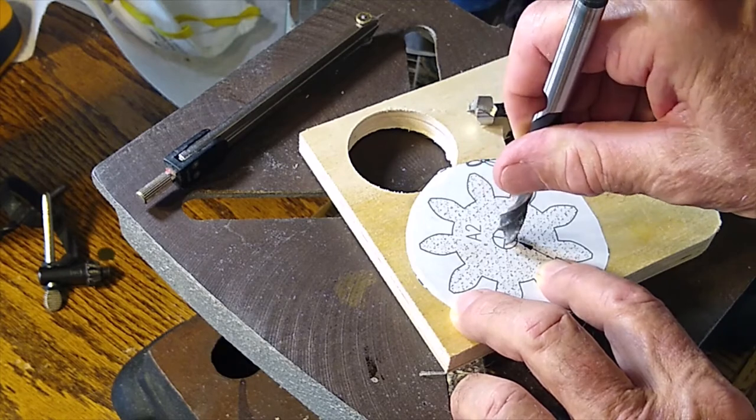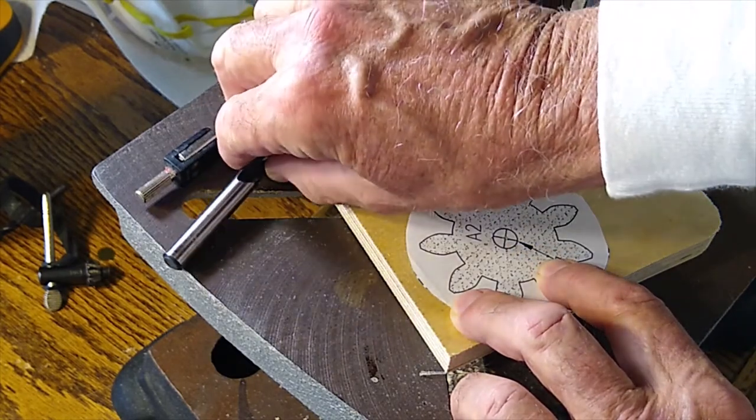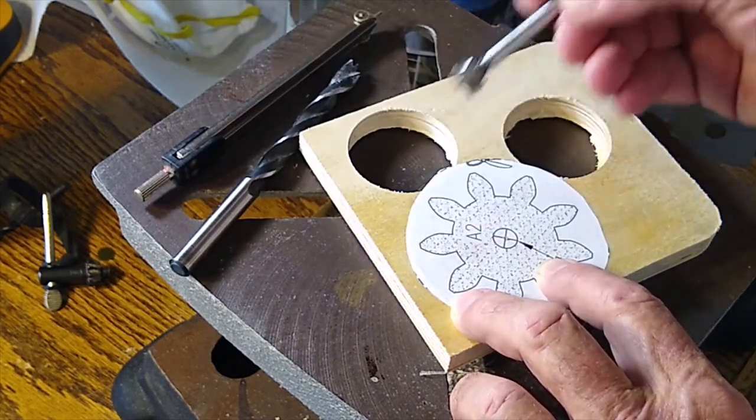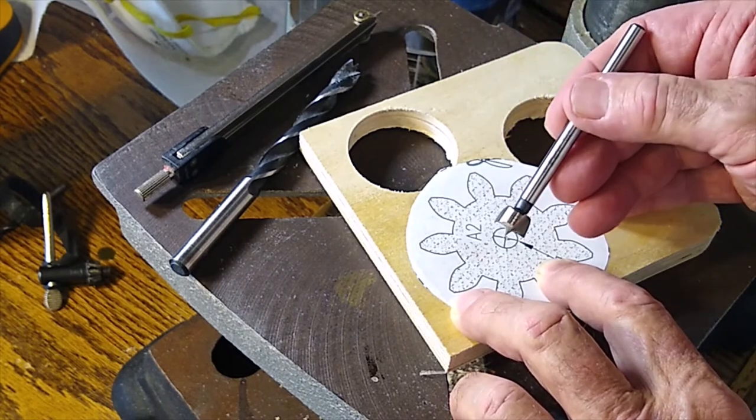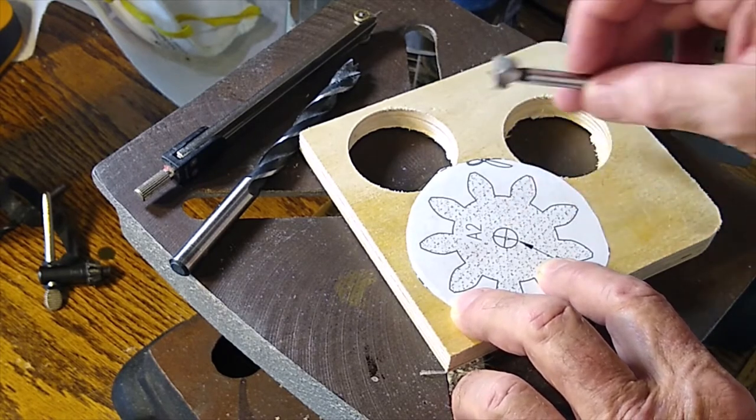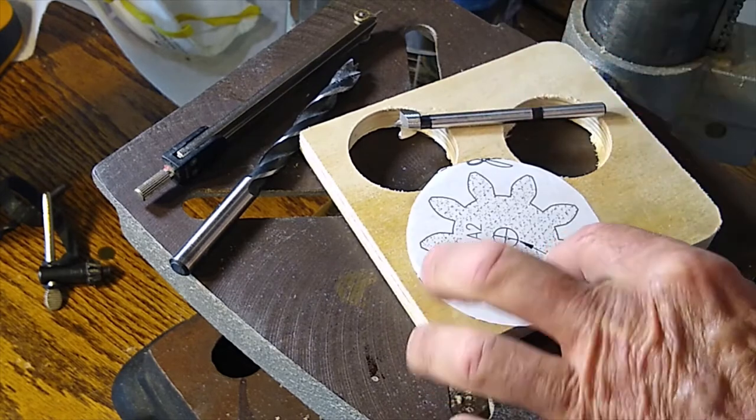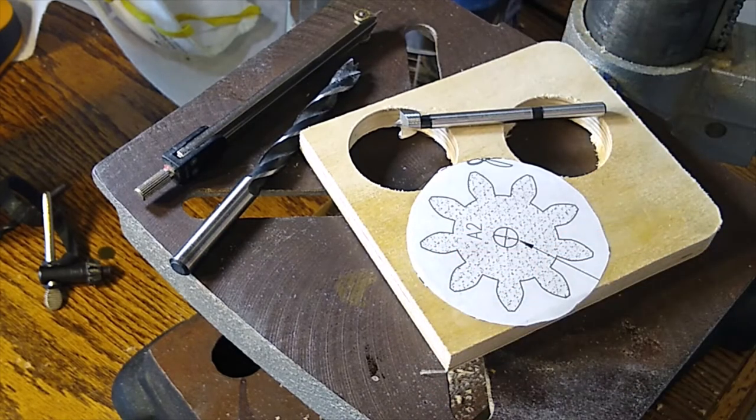Two different kinds of bits: this is a brad point bit and it'll fall in that hole. And when you start to drill, go right straight through. And this other bit is a Forstner bit and it'll work the same way. And that's how you can get it right on.